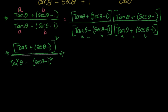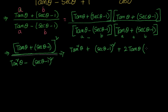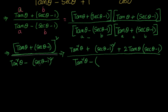Now let us simplify the numerator. The numerator is of the form (a + b) whole squared, so expanding it as a² + b² + 2ab, we get: tan²θ + (sec θ − 1)² + 2 tan θ (sec θ − 1), divided by tan²θ − (sec θ − 1)².